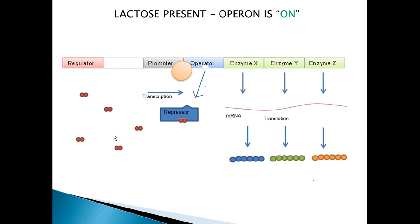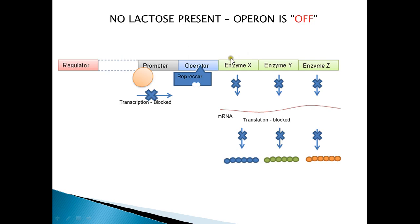Once the lactose has been fully digested, it is no longer able to bind to the repressor protein. The repressor protein returns to its normal conformation and is able again to bind to the operator region, and the operon is now turned off. The lactose operon is an example of an inducible operon — it is normally off and must be turned on.